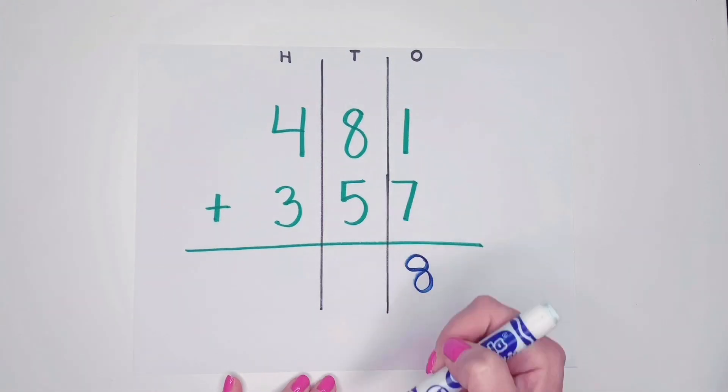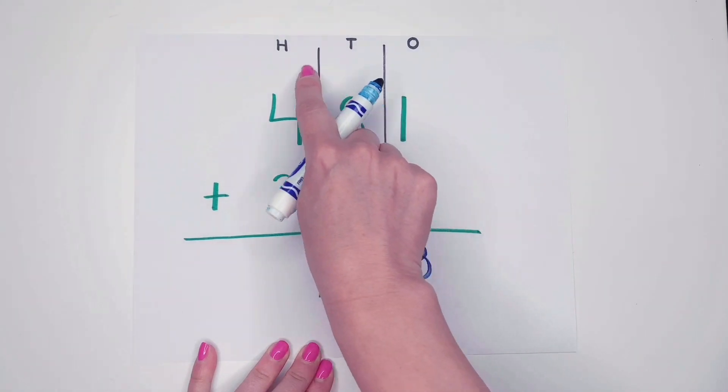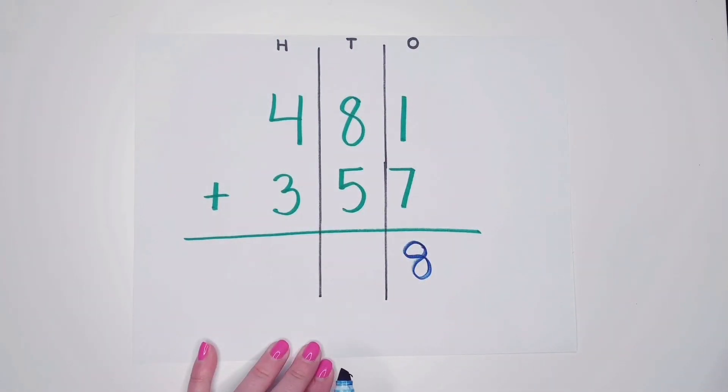Now we have eight plus five. I'm going to put the big number in my head and count on. Eight, nine, ten, eleven, twelve, thirteen. Now I can't fit thirteen in my tens column. That's more than nine. So nine or less, let it rest. Nine or more, we need to go next door and we need to regroup.